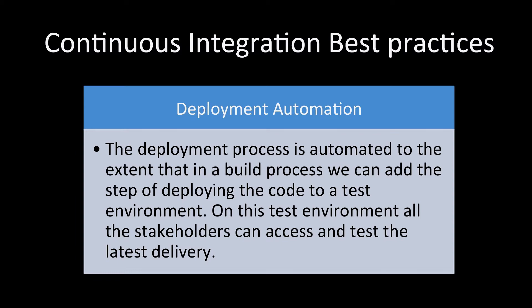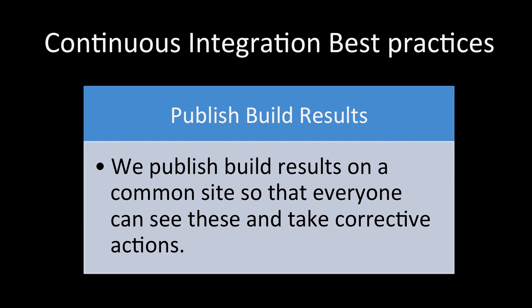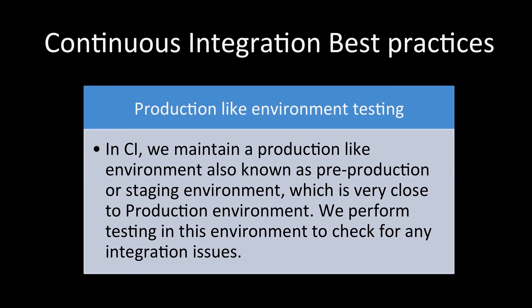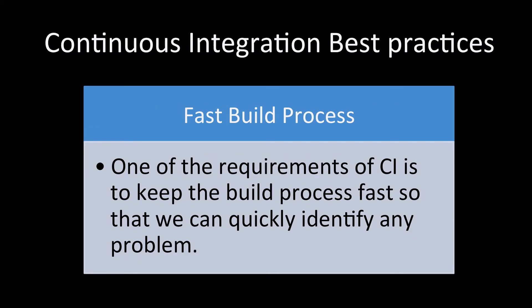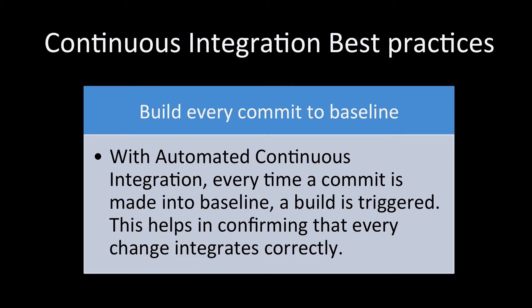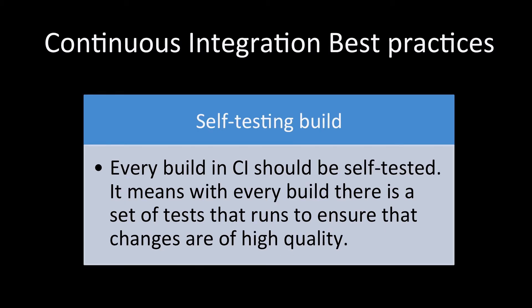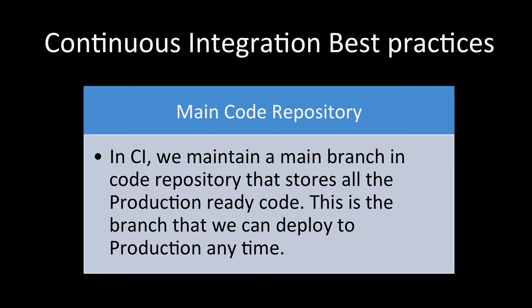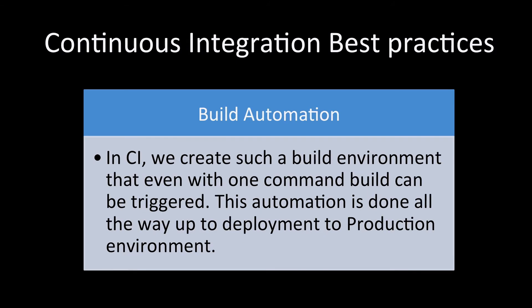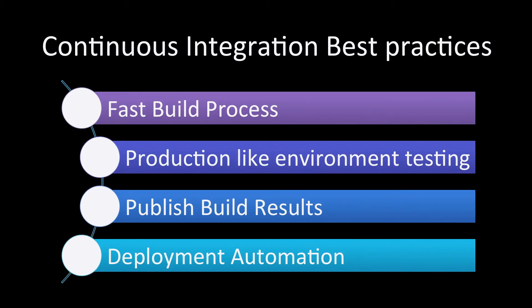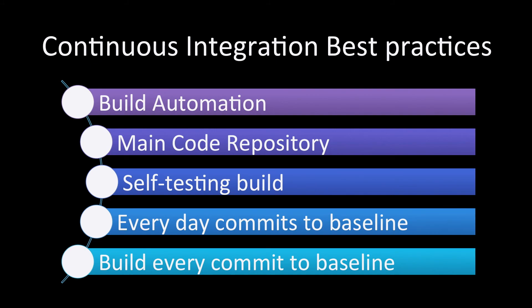To recap, the main best practices of continuous integration are: deployment automation, publish build results, production-like environment testing, fast build process, build every commit to baseline, everyday commits to baseline, self-testing build, main code repository, and build automation.